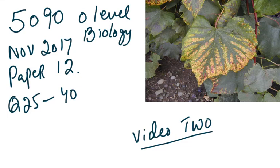Bismillahirrahmanirrahim. This is 5090 level biology. We are doing the November 2000 Paper 1-2, questions 25 to 40. We have done questions 1 to 25 in a previous video.